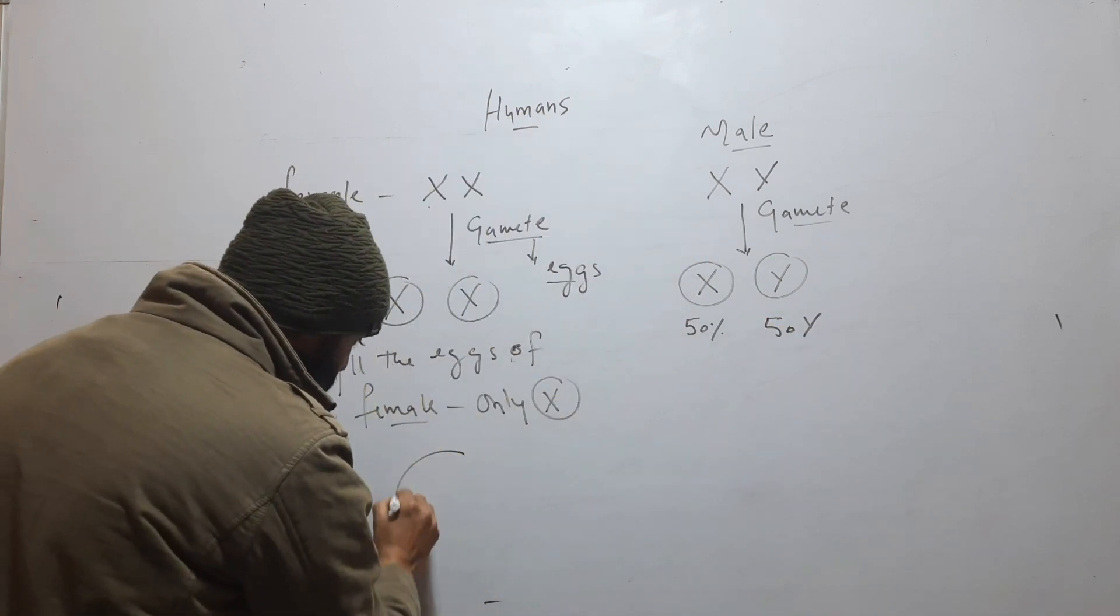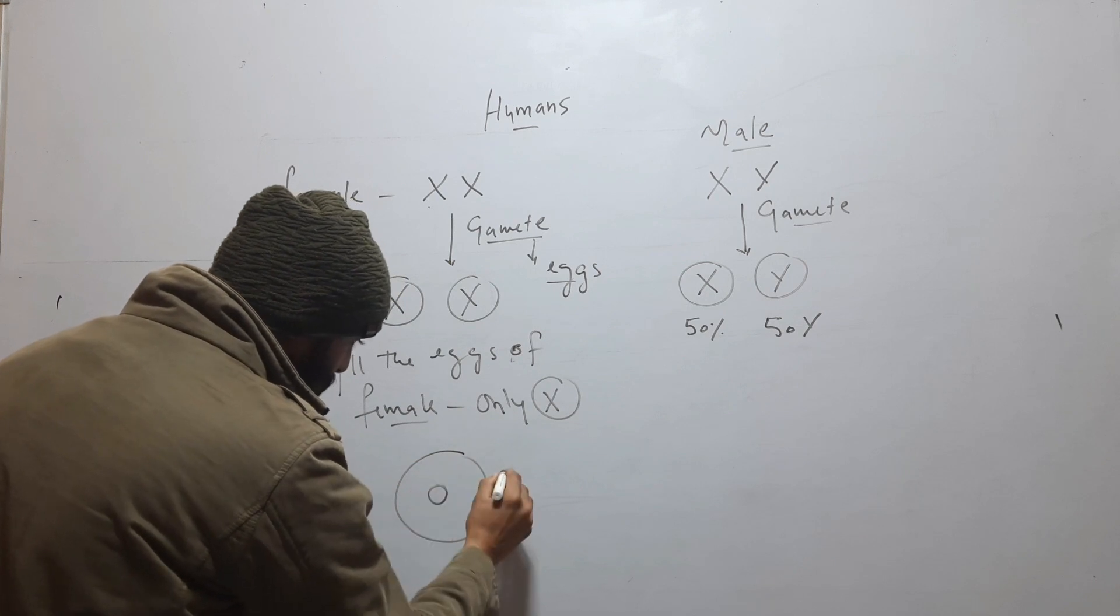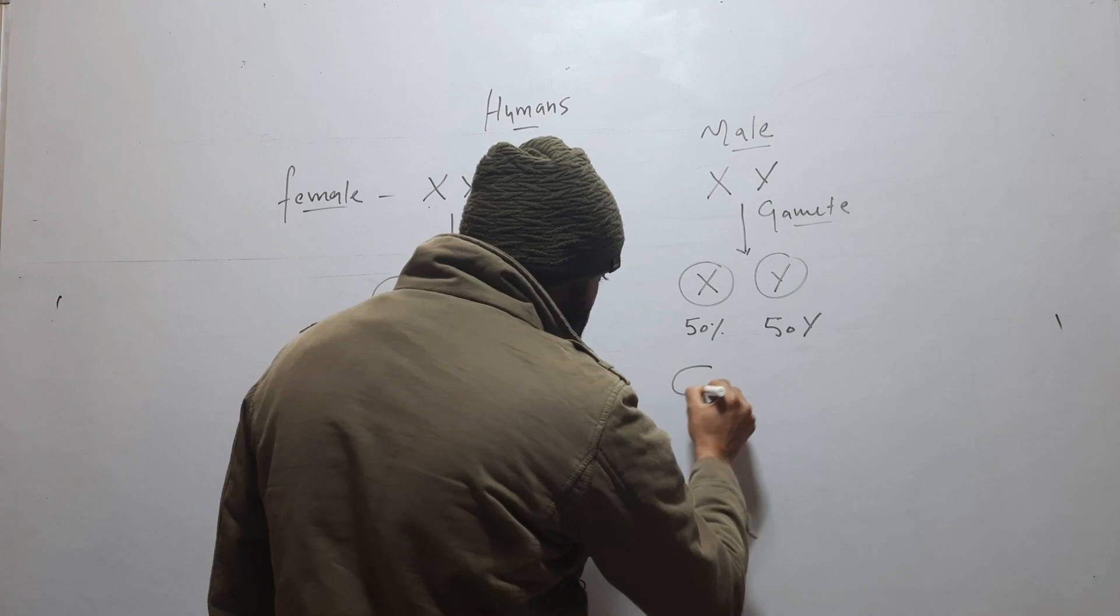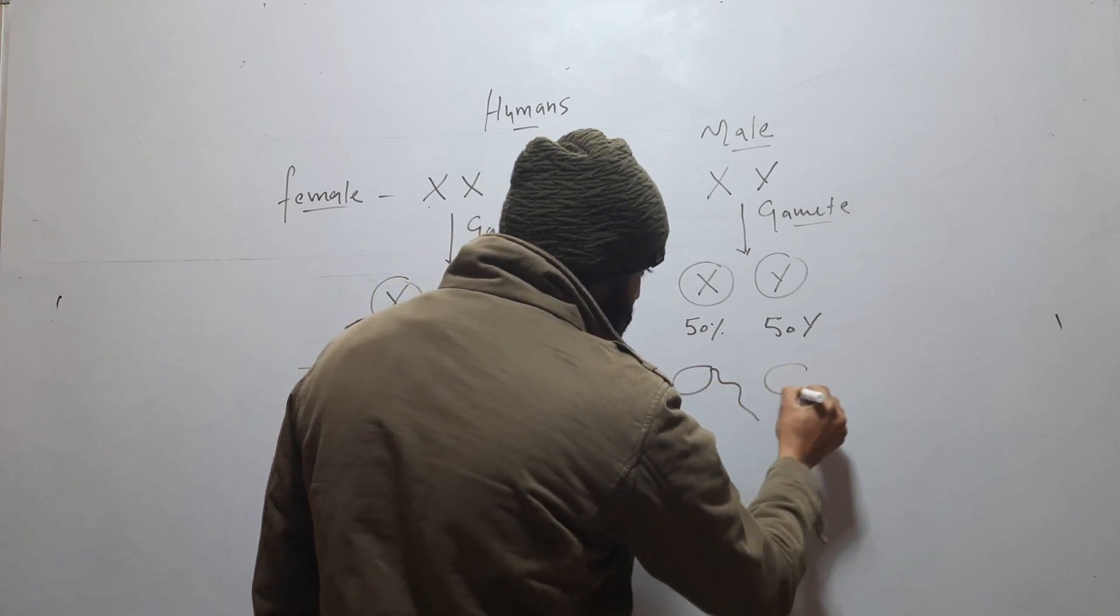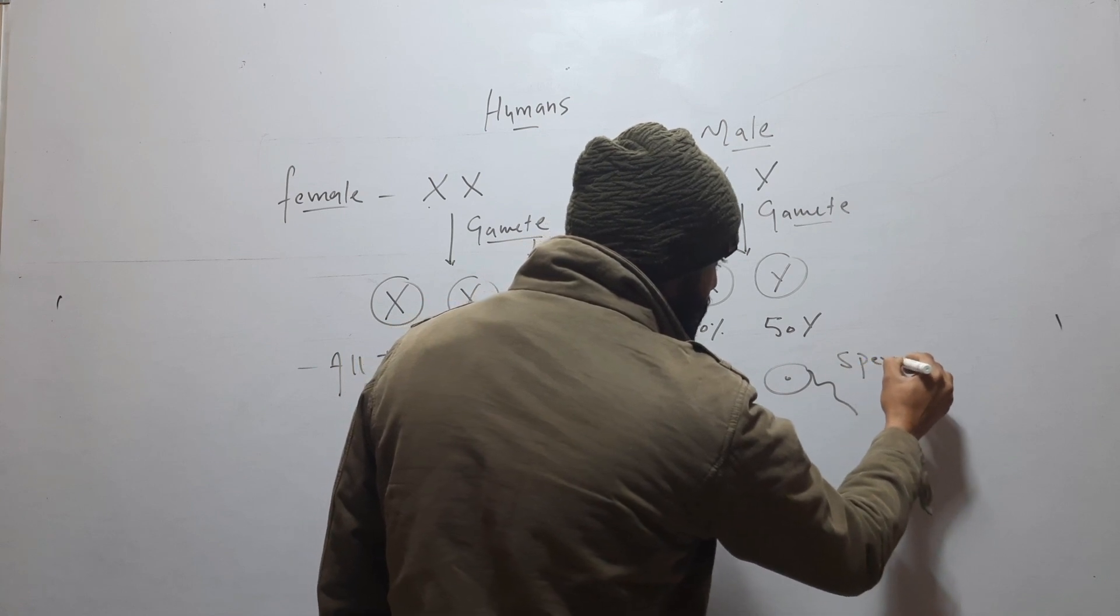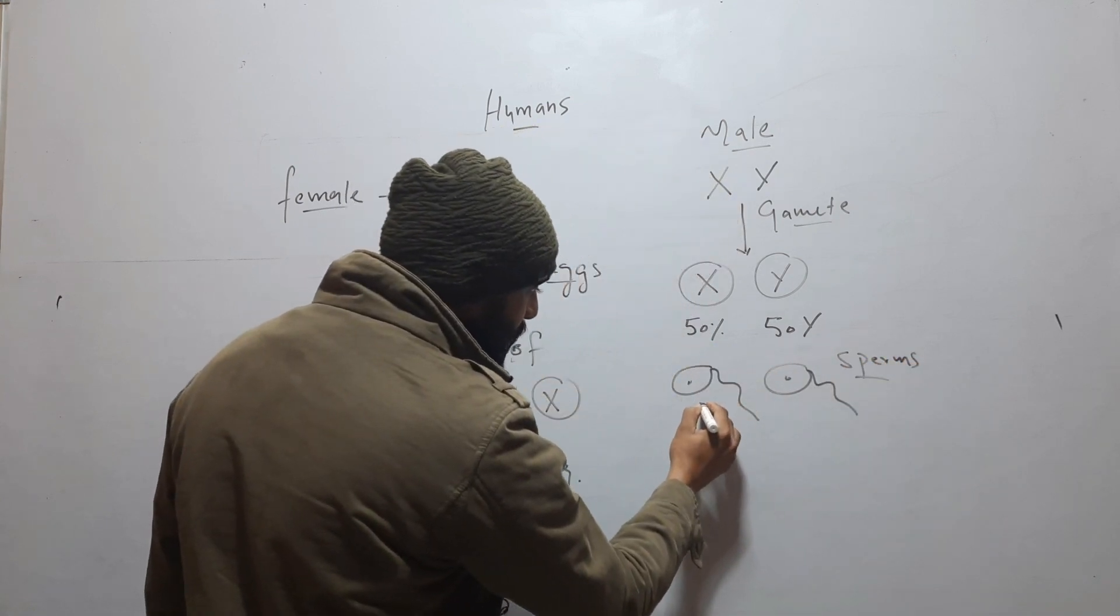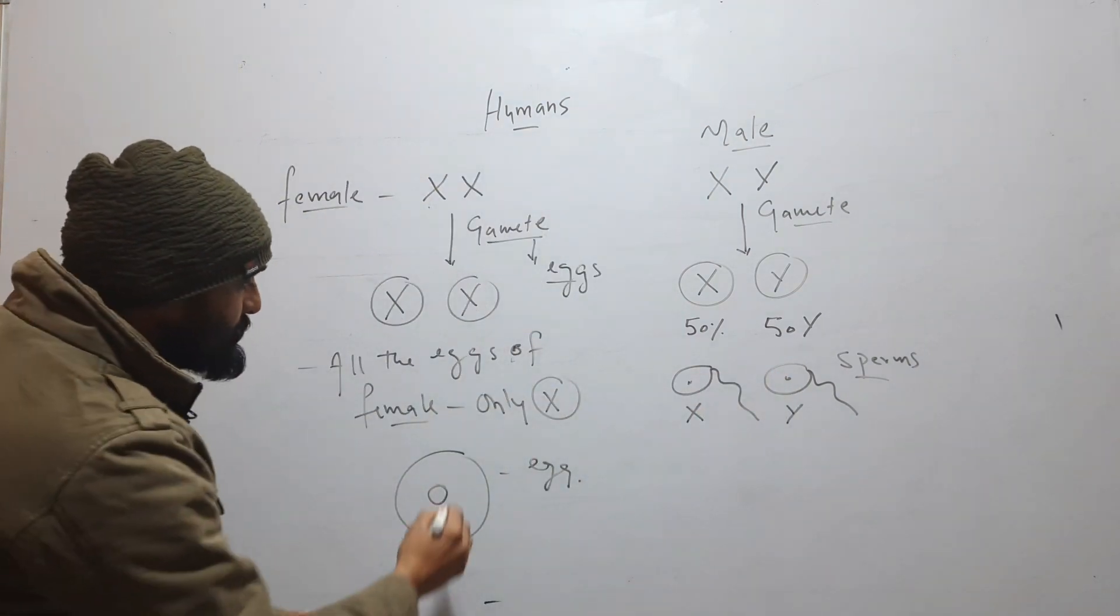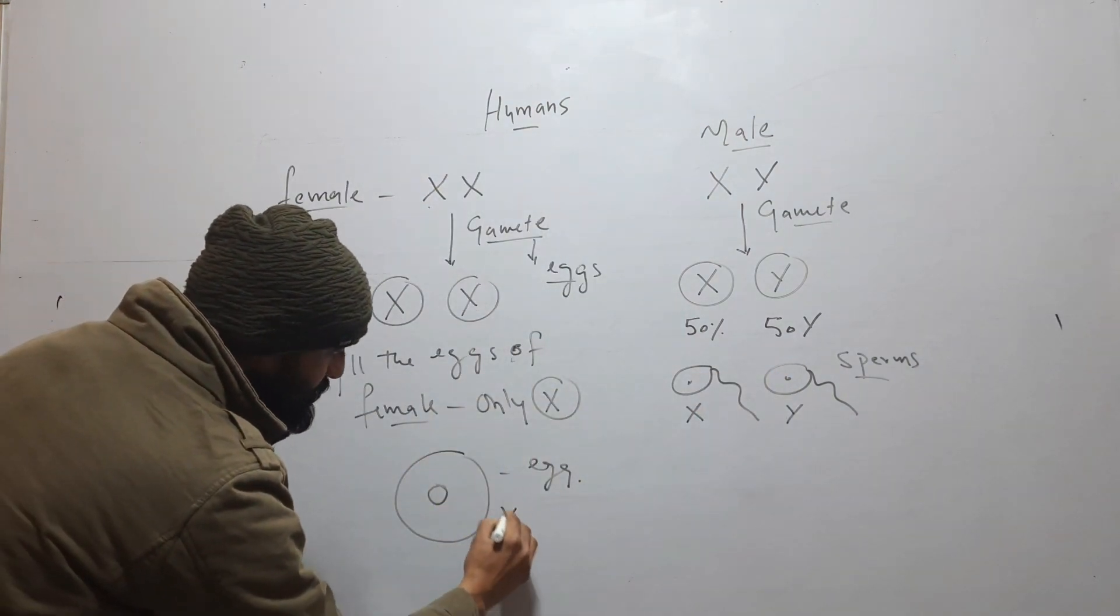So suppose this is a gamete of female - that is an egg - and these are male gametes - that are sperms. Half the sperm will have X chromosome and half have Y, but all the eggs will have only X chromosome.